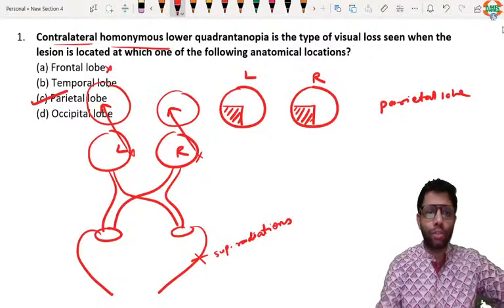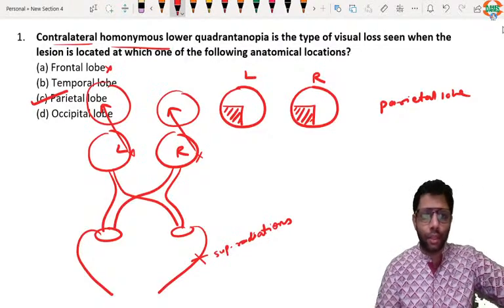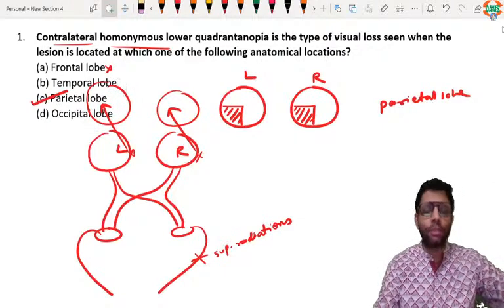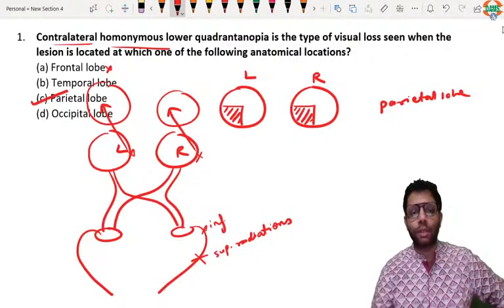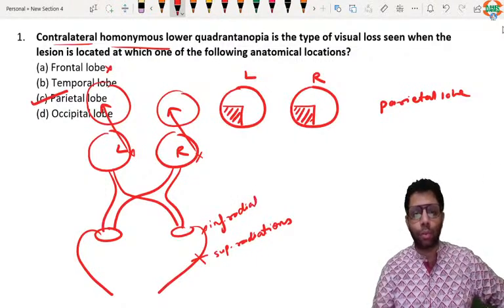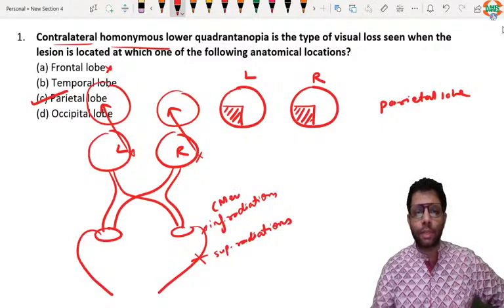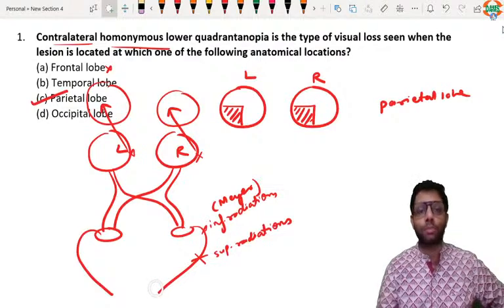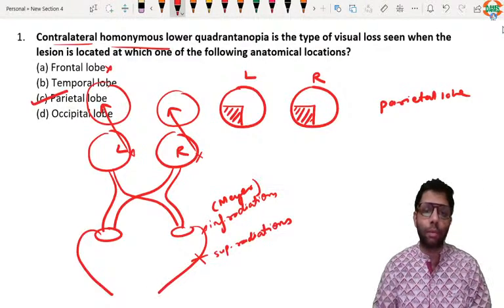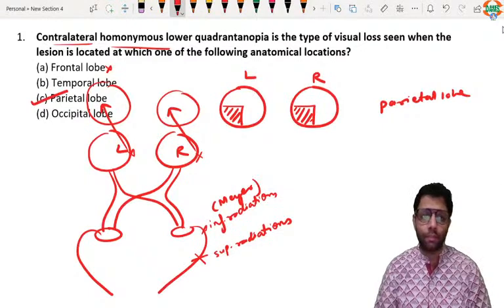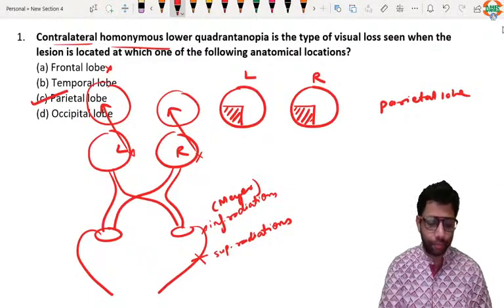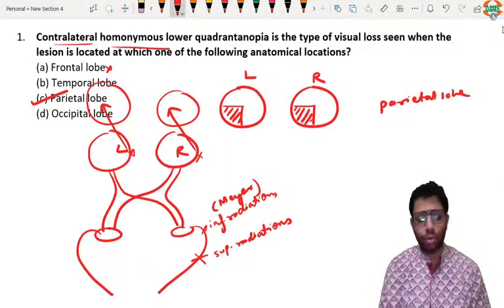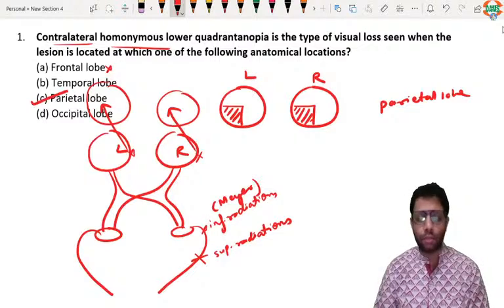So always, if there is a contralateral homonymous, the lesion has to be behind the chiasma. So even if you rule out, frontal lobe lesions will not lead to visual defects like this. So answer can be temporal, parietal, occipital lobe. In the temporal lobe, it is a contralateral homonymous superior quadrantanopia because the inferior radiation fibers are involved in temporal lobe lesions that was given by a scientist known as Meyer. And in the occipital lobe, it has to be contralateral homonymous with macula sparing because middle cerebral artery is spared. So that's why here the answer is parietal lobe lesions.